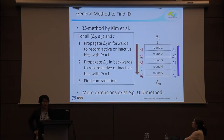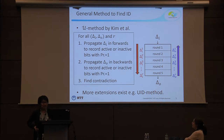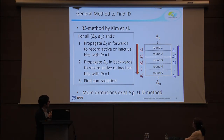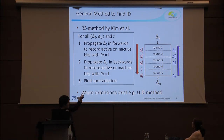First, I explain the previous general method to find the impossible differential. The UD-method is probably the most famous method. In this method, we want to check whether delta-I and delta-O are an impossible differential or not. We first propagate delta-I forwards and record active or inactive bits. Second, we propagate delta-O backwards and record the same information. Finally, we check for a contradiction. If, for example, in round three we have a contradiction, we know that delta-I and delta-O form an impossible differential.